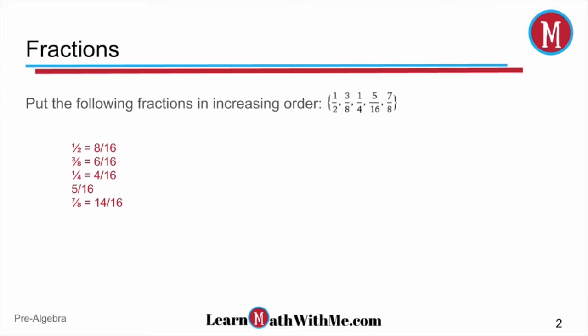I did that for each of the other 4. 5 sixteenths was already in that form, so we didn't have to do any manipulation there. But then, I need to look at the problem, and it asks to put the fractions in increasing order. That means smallest to greatest. So I'm going to look for the fraction that has the smallest numerator, and that would be that 4 sixteenths or 1 fourth. So we can put each one of those fractions in this order from smallest to largest, the 1 fourth all the way up to the 7 eighths, and I did that by using the common denominator.